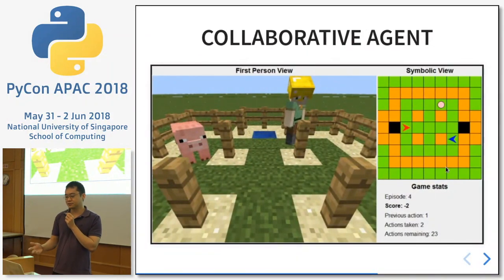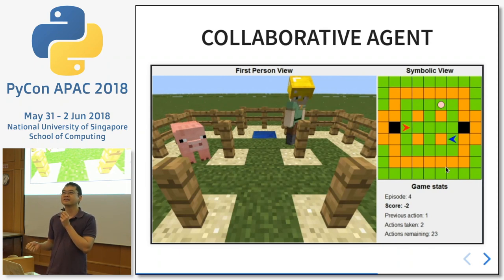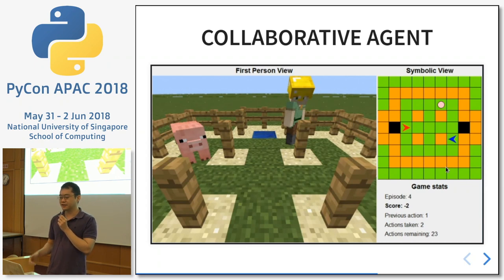Another kind of task — run by Project Malmo itself in 2017 — was a collaborative task. Here the agent works with a person: the agent is supposed to help the person corral a pig into a corner to catch it. There's a human being and then there's a robot. This is a multi-agent kind of system where the robot must assist the person.